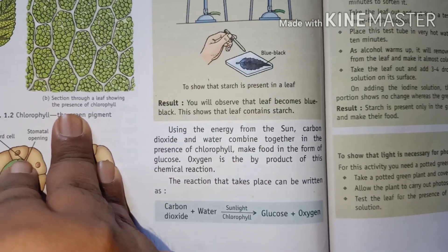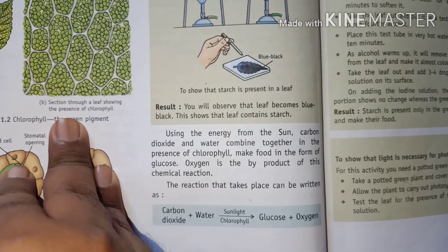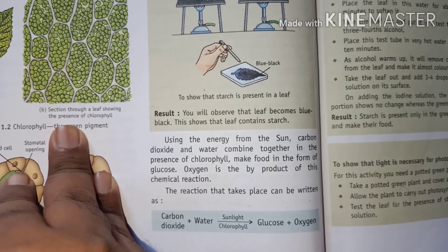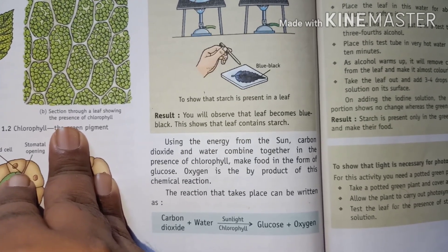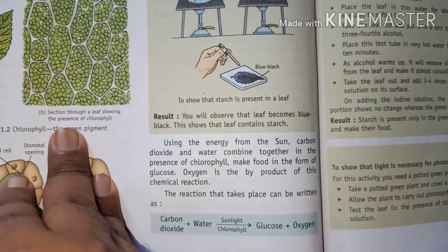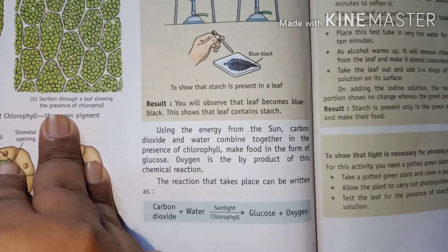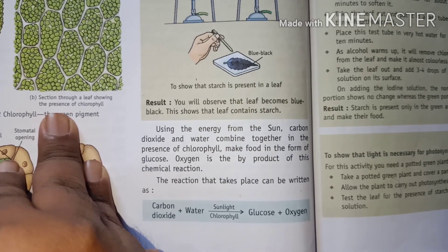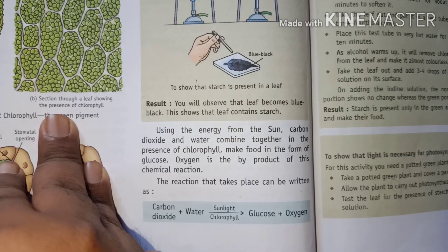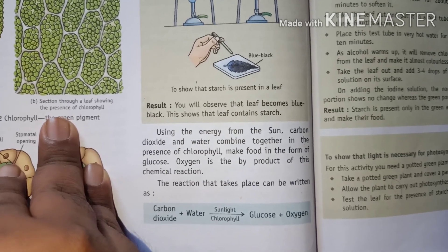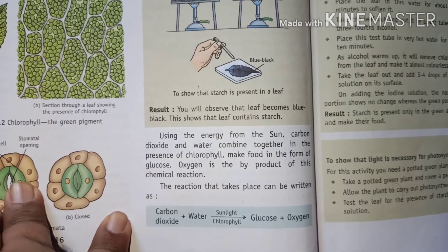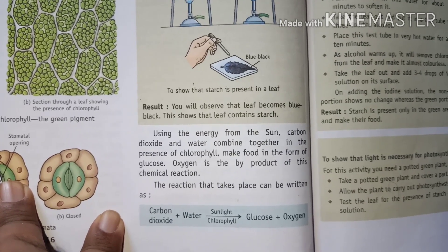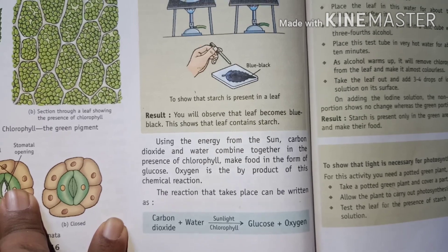Using the energy from the sun, carbon dioxide and water combine together in the presence of chlorophyll to make food in the form of glucose. Oxygen is a byproduct of this chemical reaction. The reaction can be written as: carbon dioxide plus water, in the presence of sunlight and chlorophyll, gives glucose plus oxygen. In chemical formula: CO₂ + H₂O → C₆H₁₂O₆ + O₂.